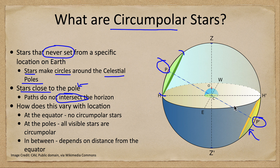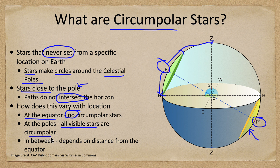If we imagine the pole moving toward the equator, the circle around it would get smaller and smaller, and at the equator there are no circumpolar stars — every star rises and sets. If we go the other way and imagine the pole going up to the zenith, the circle gets larger and larger until all of the stars are circumpolar and all visible stars are above the horizon all the time. In between, it simply depends on your distance from the equator: the closer you are to the pole, the farther north you are, the more circumpolar stars there will be, and the farther south toward the equator, the fewer circumpolar stars there will be.